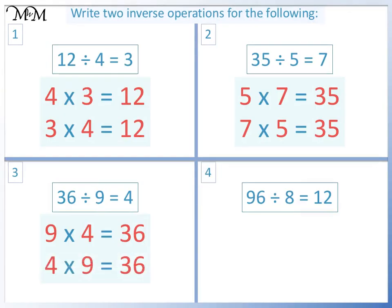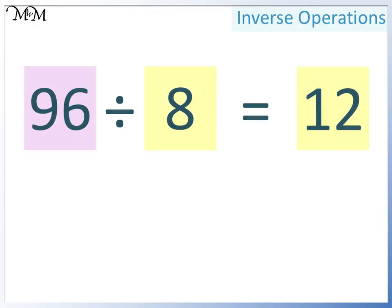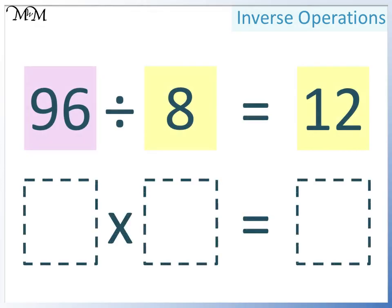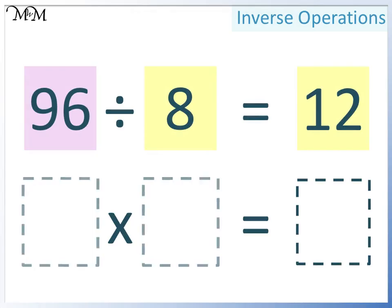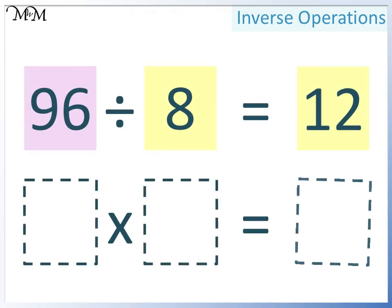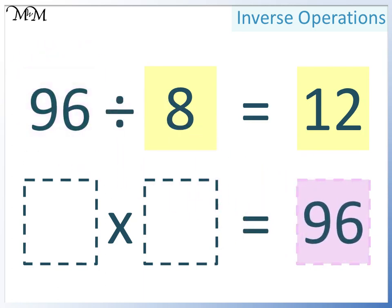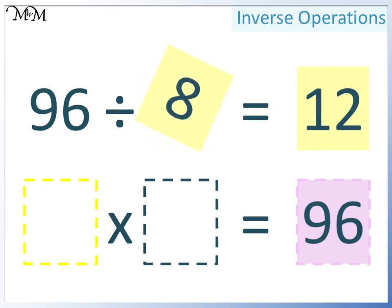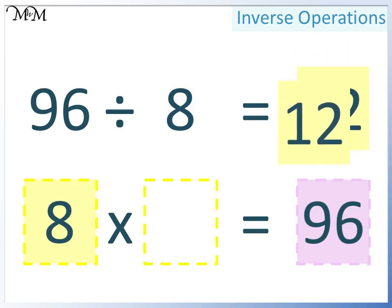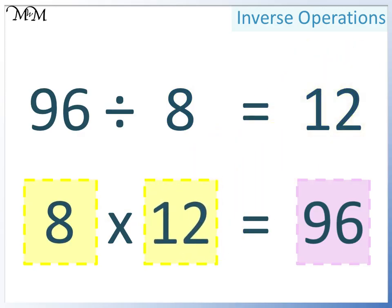Question 4: 96 divided by 8 equals 12. Two smaller numbers multiply together to make a larger number, so 96 must go here. Either 8 or 12 can go here — this time we'll have 8. And so 12 must go here. 8 times 12 equals 96.